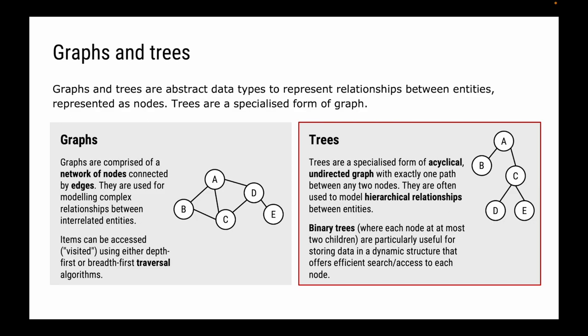If you think about something like a linked list, we don't have that efficient search. We sacrifice being able to use anywhere in memory, which is great, and easily adding new items to the end — no problems. But searching always involves an O(N) access time. Binary trees, particularly binary search trees, allow us to solve that problem by building a dynamic structure that we can efficiently search.